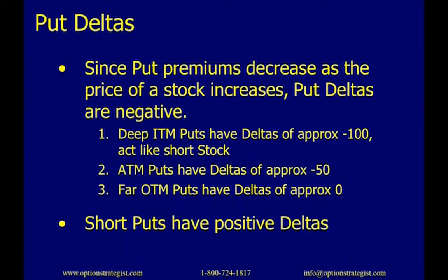Put premiums decrease as the price of a stock increases, so put deltas are negative. Deep in-the-money puts have deltas of approximately minus 100 and will act like short stock. At-the-money puts have deltas of approximately minus 50. Far out-of-the-money puts have deltas of approximately zero. Short puts have positive deltas — if you sell a put, you're adding positive deltas to your position.